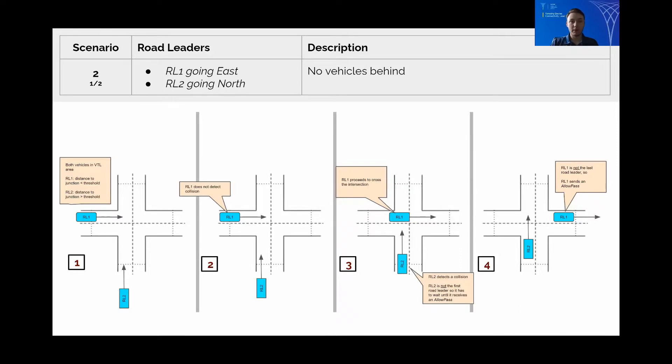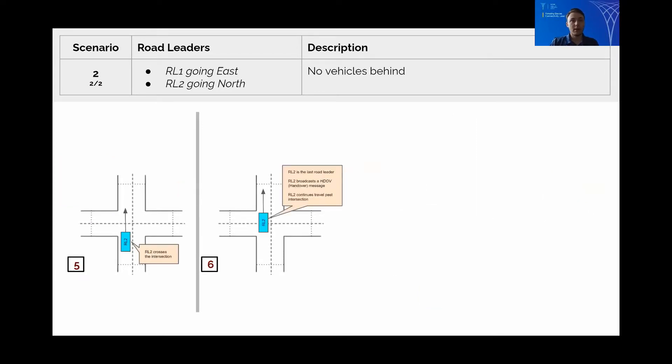Road Leader 1 successfully crosses the intersection and sends an allow pass message to Road Leader 2 which is the next road leader. Road Leader 2 then crosses the intersection and since Road Leader 2 is the last road leader it broadcasts a handover message and continues past the intersection.